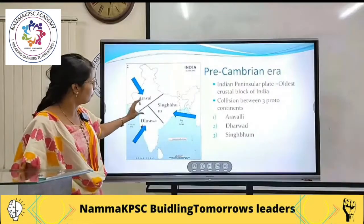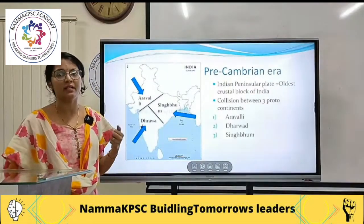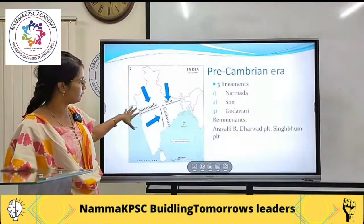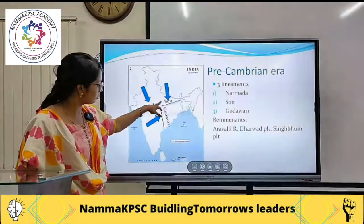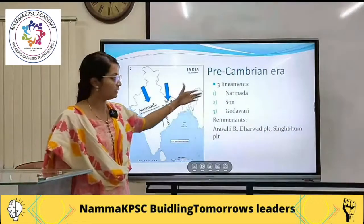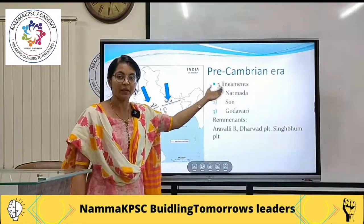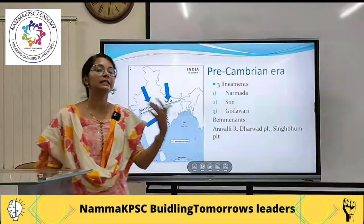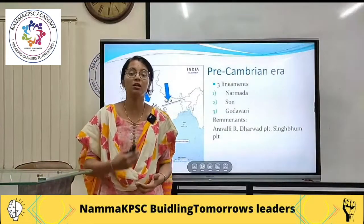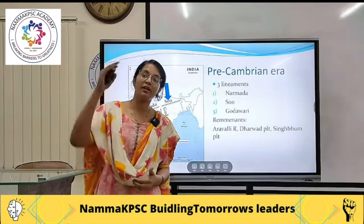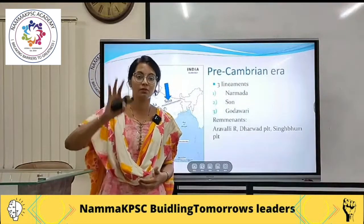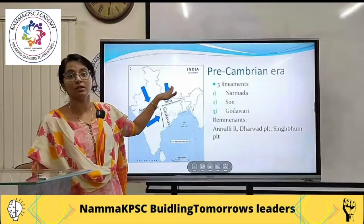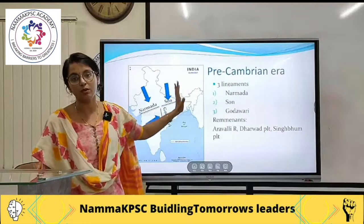Therefore, at the part where they had collided, there were rift valleys, and there were rivers which flew in these particular rift valleys. The points or places where they actually collided — at this liniment — there were rivers which flew at this particular time. If the question is asked to arrange the rivers according to their geological history, first you have to say that at the creation of Peninsular India we now know the Narmada, Son, and Godavari.